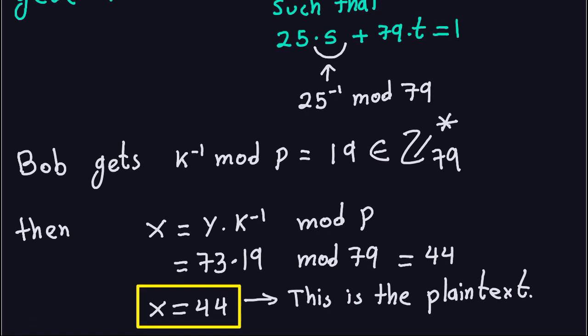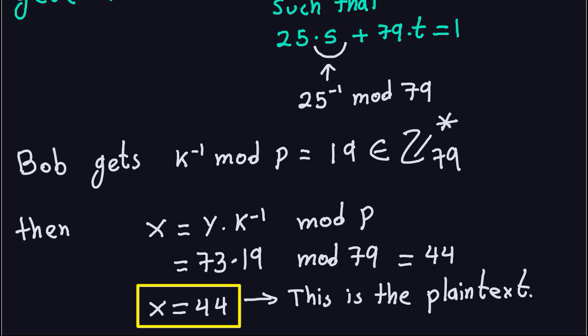So K inverse is 19. Bob takes the ciphertext 73, multiplies by the inverse of K modulo 79, which is 19: 73 times 19 modulo 79 gives 44. That's the original message Alice sent — the plaintext. That's how this example works. In reality, you'd choose the prime to be large, at least 1024 bits by today's standards. In the next video, I'll discuss another aspect of the El Gamal encryption scheme.